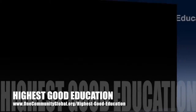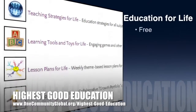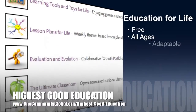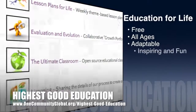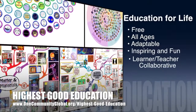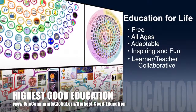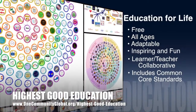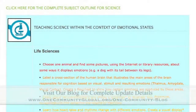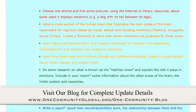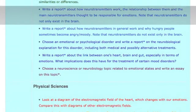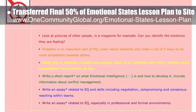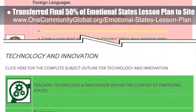One Community's approach to highest good education is open source and free shared, designed for all age groups, adaptable to any schooling environment, inspiring and fun for all participants, a learner-teacher collaborative, and it includes U.S. Common Core Standards. This week the core team transferred the final 50% of the written content for the emotional states lesson plan to the website.